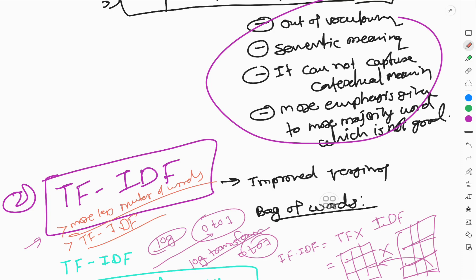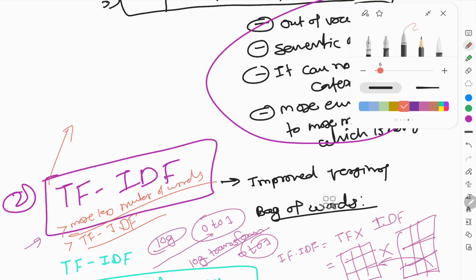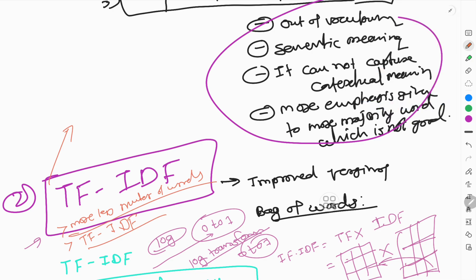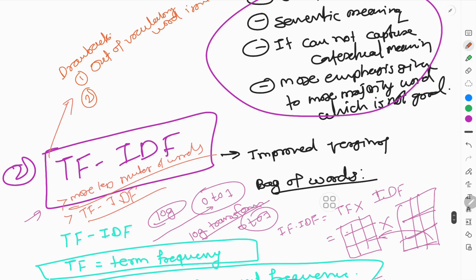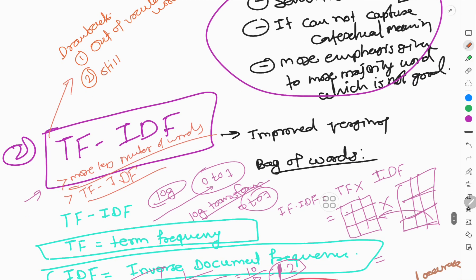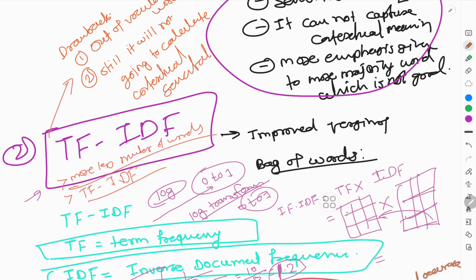Still, TF-IDF has some drawbacks. It still faces the out-of-vocabulary word issue, though not as severe as bag of words. It also does not calculate contextual or semantic meaning.